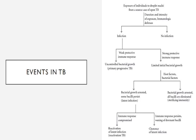Events in TB all start from the exposure of individuals to droplet nuclei from a source case of open TB. Depending upon the duration and intensity of exposure and the immunologic differences, infection may or may not occur. If there is a weak protective immune response, then this progresses to uncontrolled bacterial growth, which is called primary progressive TB. If there is a strong, productive immune response, then there is limited bacterial growth.